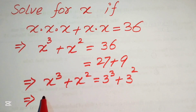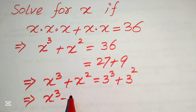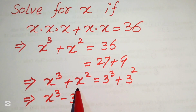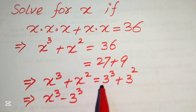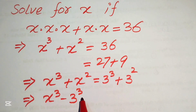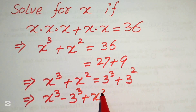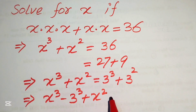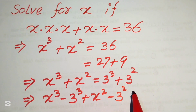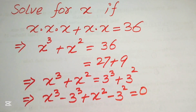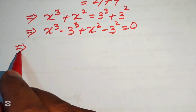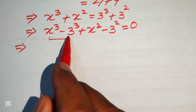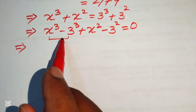We move both terms to the left-hand side. The plus 3 cubed becomes minus 3 cubed, and the plus 3 squared becomes minus 3 squared. So we get x cubed minus 3 cubed plus x squared minus 3 squared equals 0.